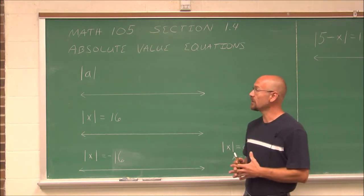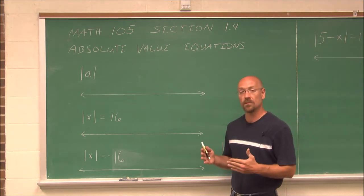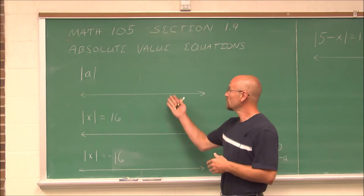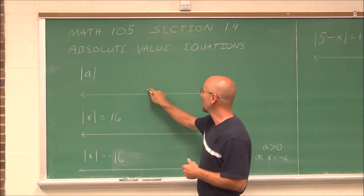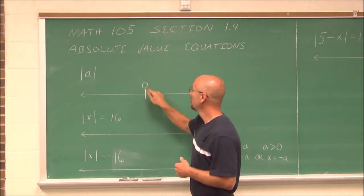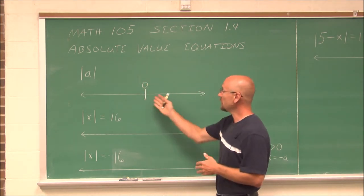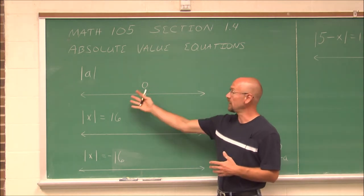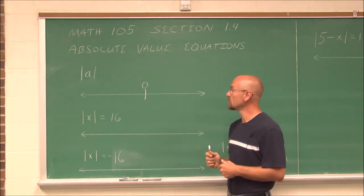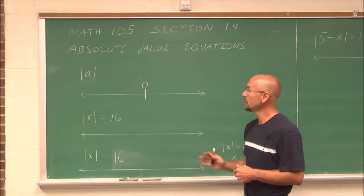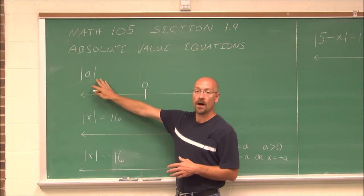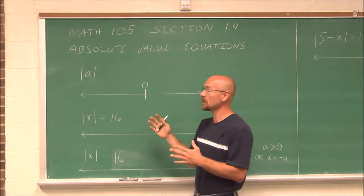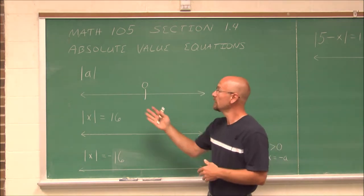An absolute value of a number is asking the distance from 0. So if we have a number line and we choose 0 to be the center, values to the right being positive and values to the left being negative, an absolute value is just saying how far from 0. It doesn't matter to the left or to the right.